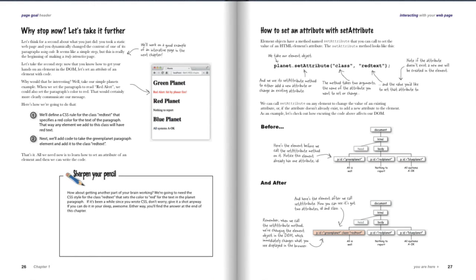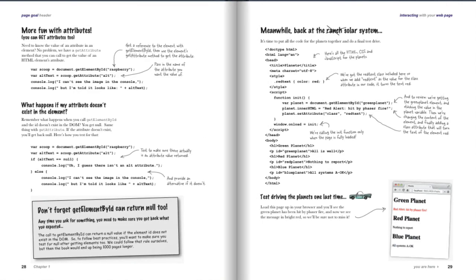Before we leave the chapter, we talk about a method of the element object — the setAttribute method. You can use this to change the class of an HTML element, so we take you through how to use that to turn some of the text in the webpage red.